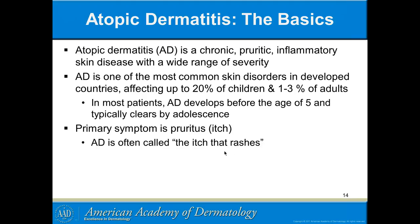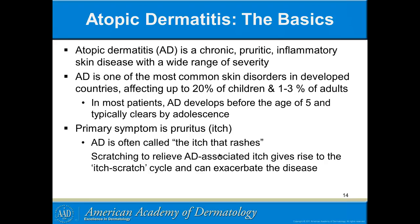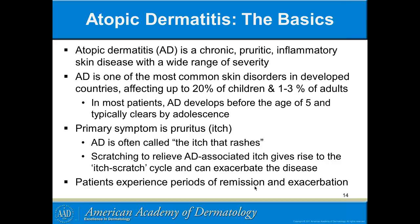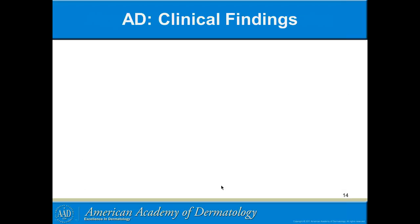Atopic dermatitis is often called the 'itch rash' — it's the rubbing and scratching that induces a lot of the changes. That's when you get lichen simplex chronicus: that thickened skin on the front of the shins, seen more in adults than children. Patients experience periods of remission and exacerbation — it waxes and wanes just as in the history of this child. That's one of the problems with patients thinking that something they put on or some dietary alteration made it better — it may just be part of that natural waxing and waning.